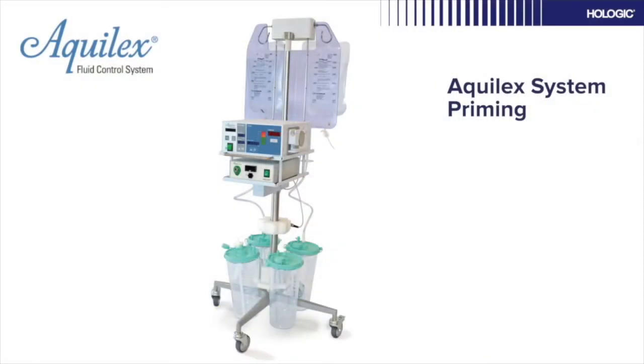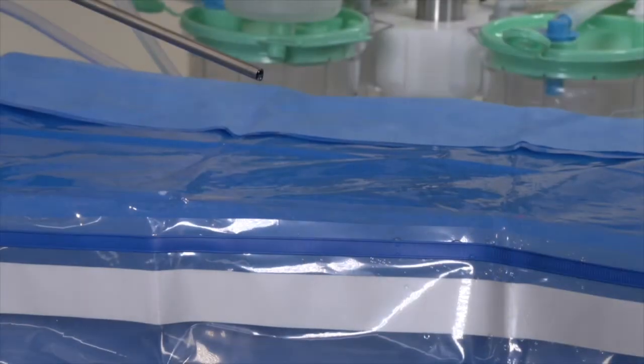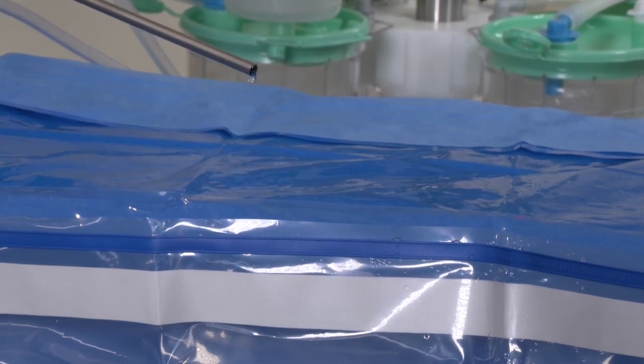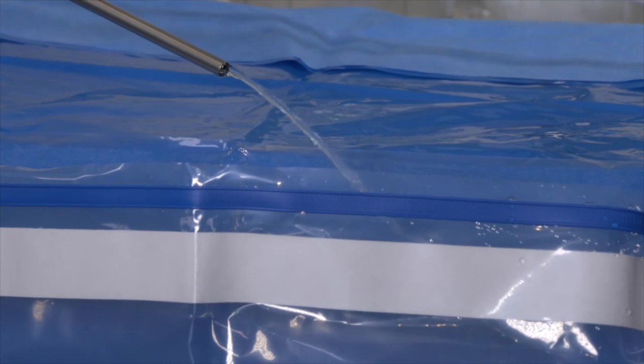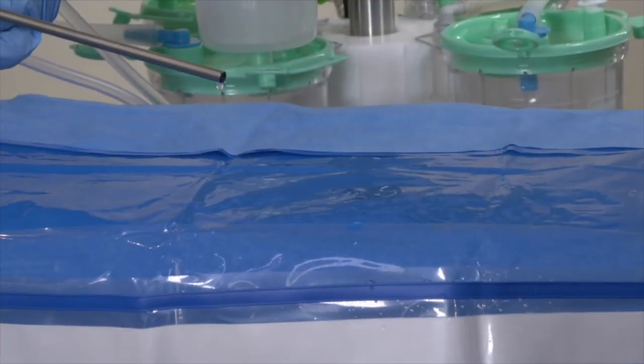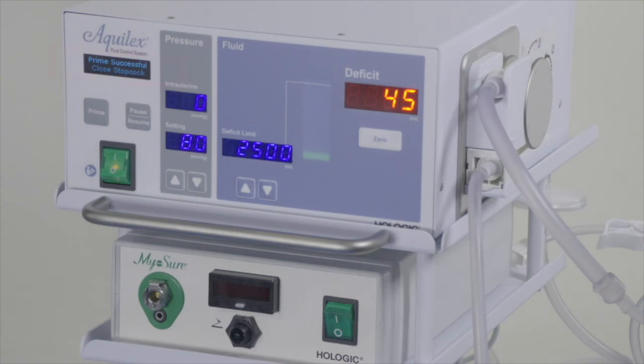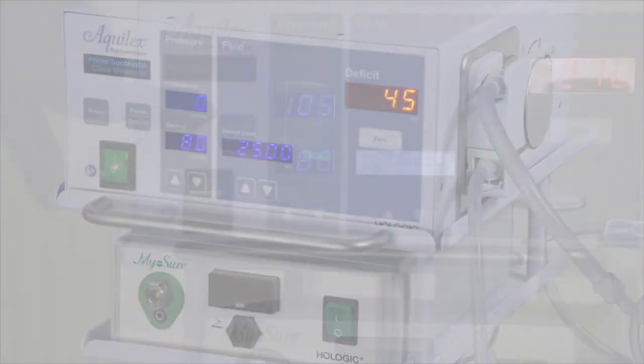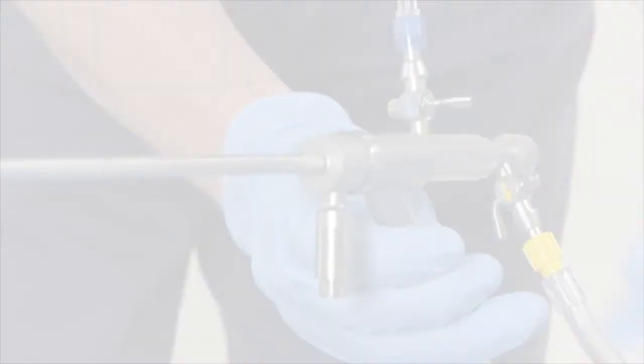Now you are ready to prime the scope. Open both inflow and outflow stopcocks on the scope. Point the tip of the scope into the underbuttock drape in line with the axis of the uterus. Press the prime button to start priming the system. Saline will be pumped through the scope at various speeds to calibrate for approximately 20 seconds. The pump will make an audible sound when the calibration is completed, and the screen on the Aqualex will display prime successful, close stopcock. Press the pause resume button to stop the fluid flow, or the clinician can close the inflow stopcock on the hysteroscope.